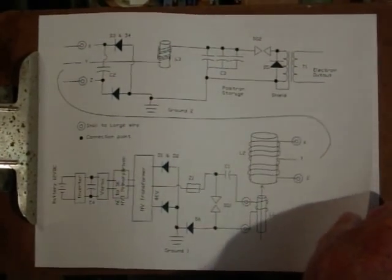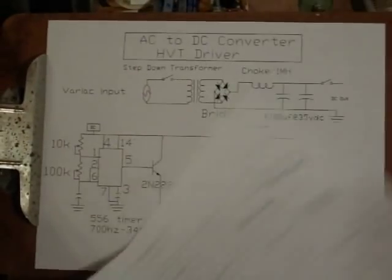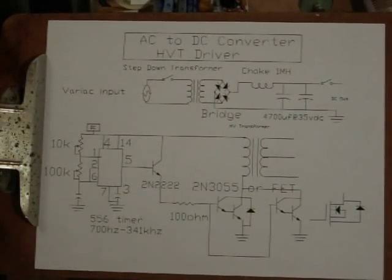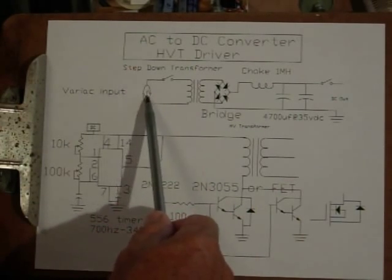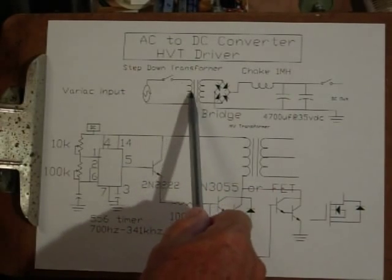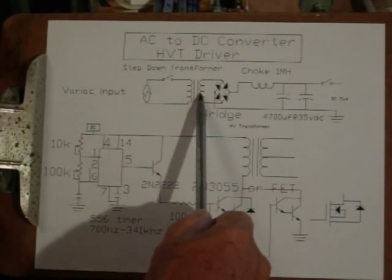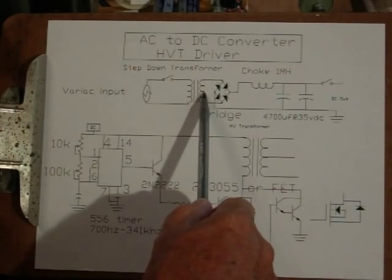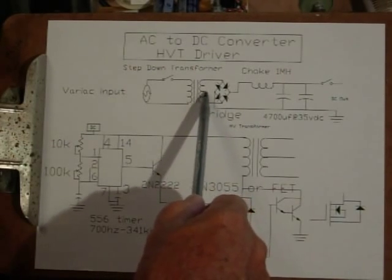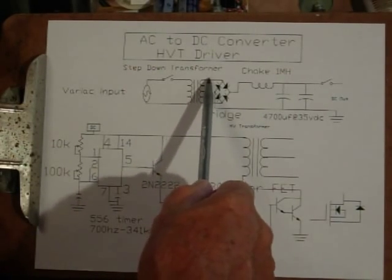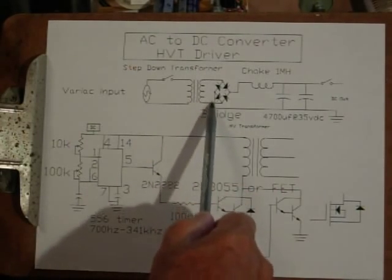Alright, let me go on into the second page of the schematic here. This is the AC to DC converter. I got the Variac input here, switch. This is a Radio Shack transformer. The center tap's not used.